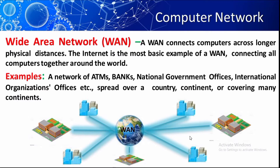Suppose one LAN is in Delhi and another LAN is in Bangalore. These two local area networks want to communicate with each other — they can communicate with the help of wide area network. Examples of wide area network include networks of ATMs, banks, international organizations, and national government offices which spread over a country, continent, or covering many continents.